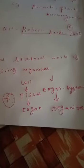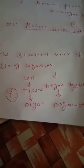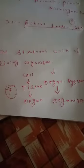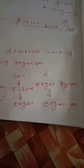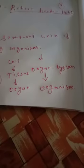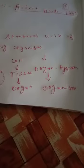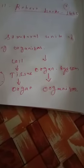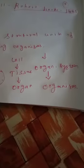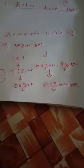An organ means a group of tissues that perform a specific function. An organ system means a group of organs that perform different functions. For example, the circulatory system, reproductive system, excretory system, and respiratory system — these are different types of organ systems in our body.